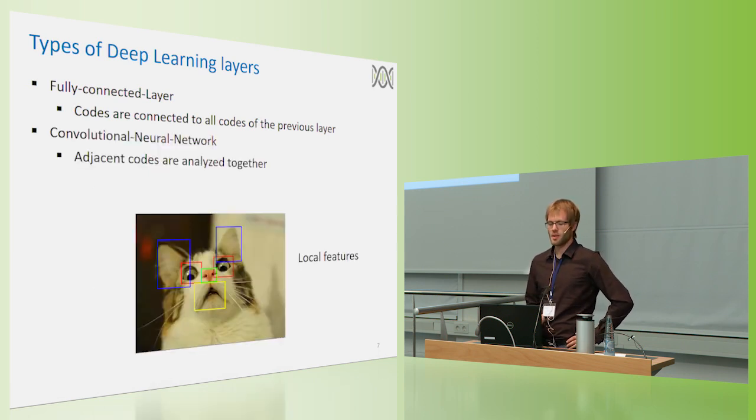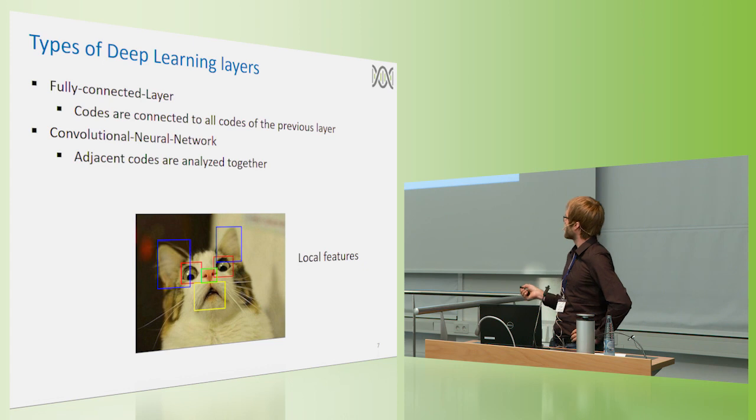The second one would be a convolutional neural network. This would focus on local features and combine adjacent variables. For example, in picture recognition, when we're looking at a picture of a cat, we would first try to identify local features like here is an eye, here is an eye, here is a nose, here is a mouth, here are two ears. This in the next layer would then be classified as a cat, for example.